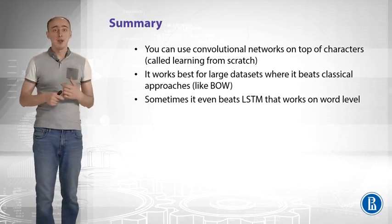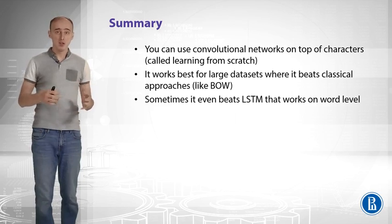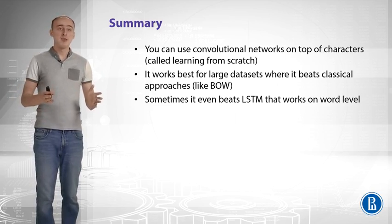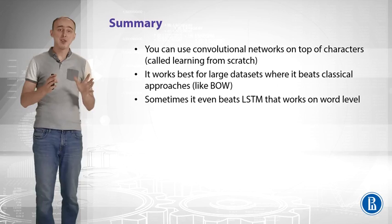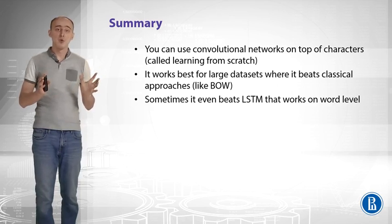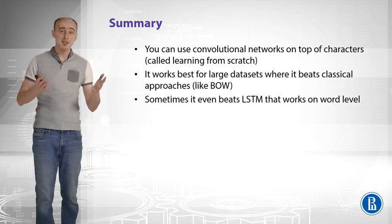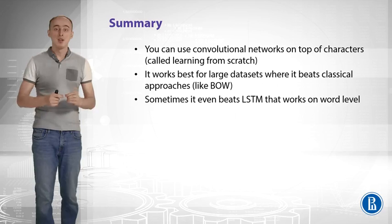Let me summarize. You can use convolutional networks not only on top of words, but also on top of characters. You can treat text as a sequence of characters. This is called learning from scratch in the literature. It works best for large datasets where it beats classical approaches like bag of words. And surprisingly, sometimes it even beats LSTM that works on word level.